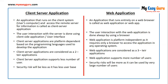Client-server applications are considered two-tier applications, while web applications are considered three-tier applications. Client-server applications support fewer users, while web applications support more users. Security risk is less in client-server applications due to a smaller user base, while security risk is greater in web applications as they can be accessed by a very large number of users.